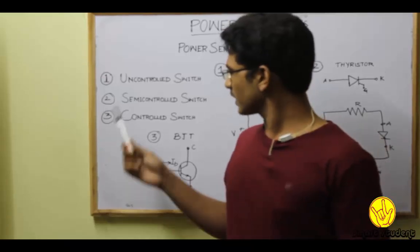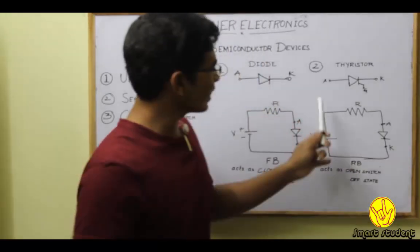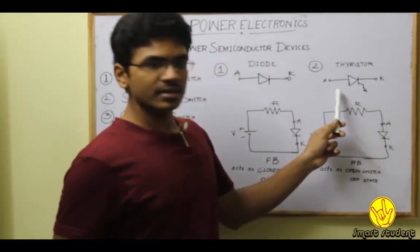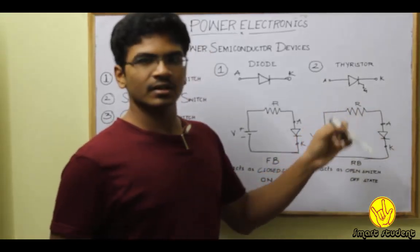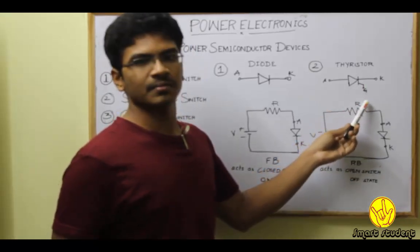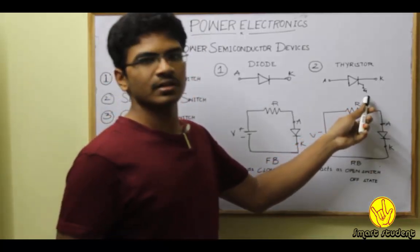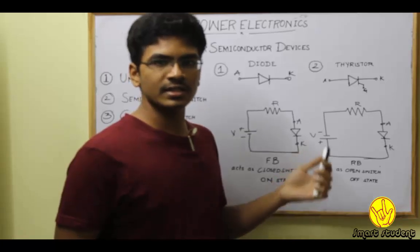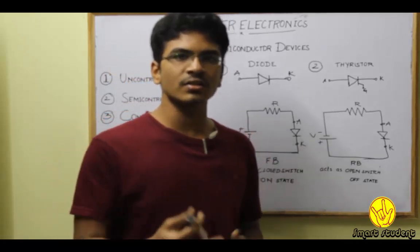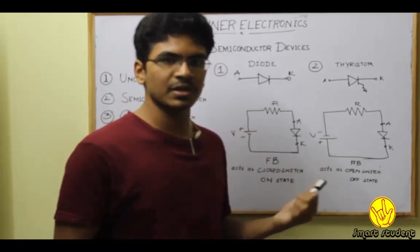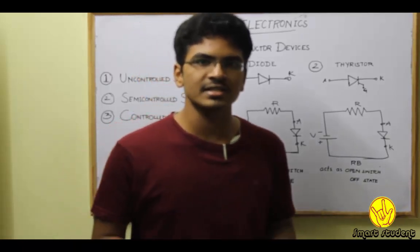Coming to the second classification, semi-controlled switch. The best example for the semi-controlled switch is a thyristor, which is a three-terminal device: anode, cathode, and a gate. A thyristor can be turned ON by giving a pulse to the gate terminal. But after it is turned ON, we cannot turn it OFF by using the same gate terminal. The turn OFF condition of a thyristor depends on the circuit conditions. So we can control only the ON state of the thyristor externally by giving a gate pulse, but we cannot control the OFF state. So it is named as a semi-controlled switch.